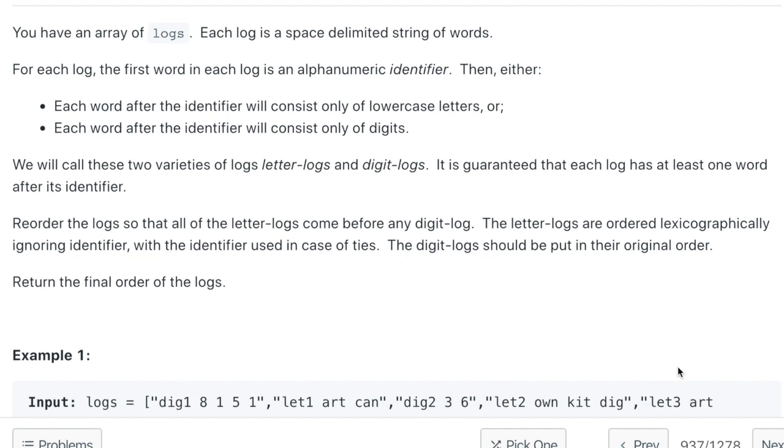So we need to reorder the logs so that all the letter-logs come before any digit-log. And the letter-logs are ordered lexicographically ignoring the identifier, means alphabetically, and with the identifier in the case of ties.